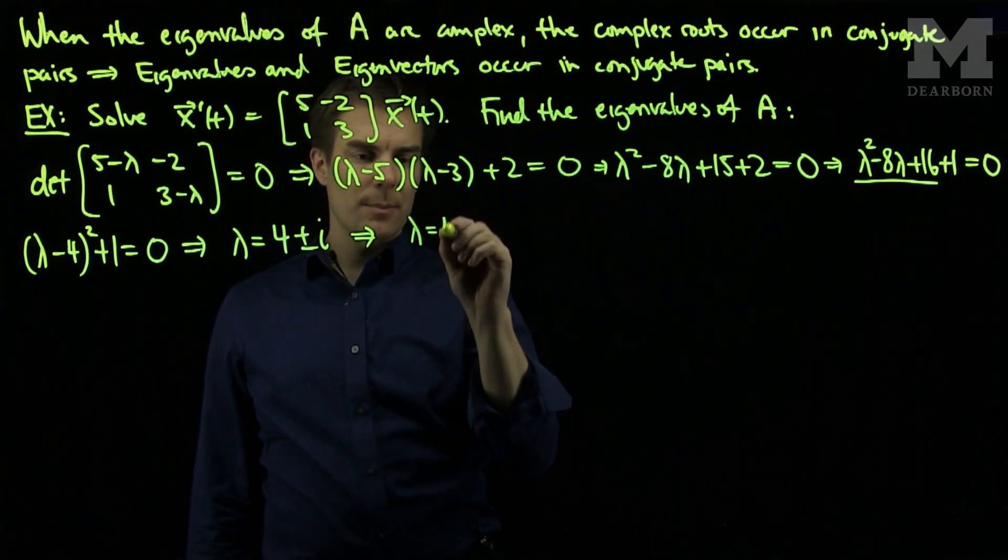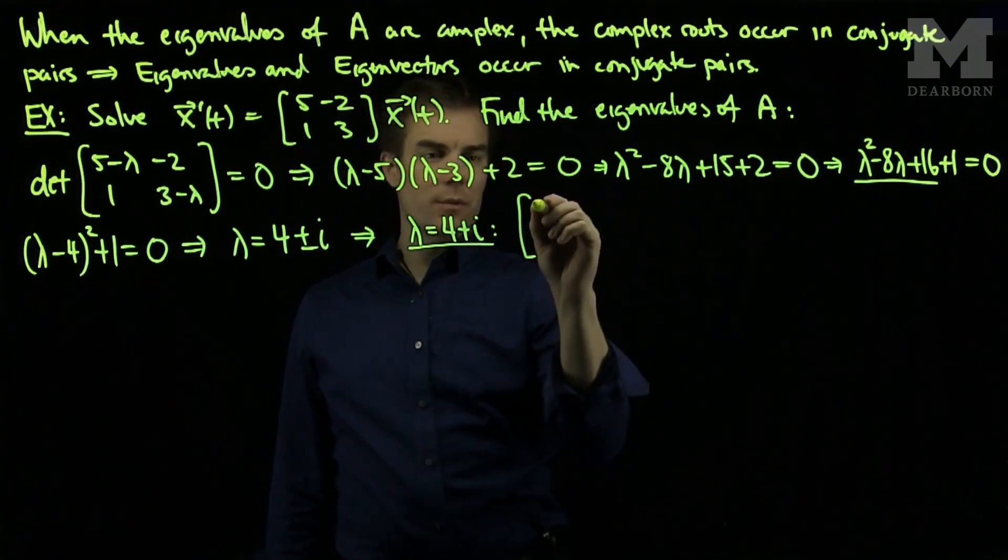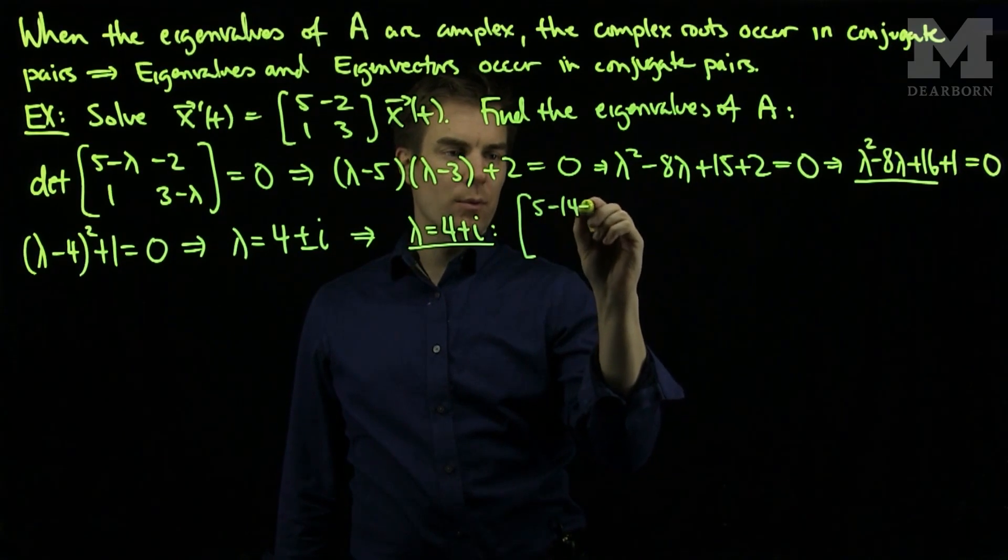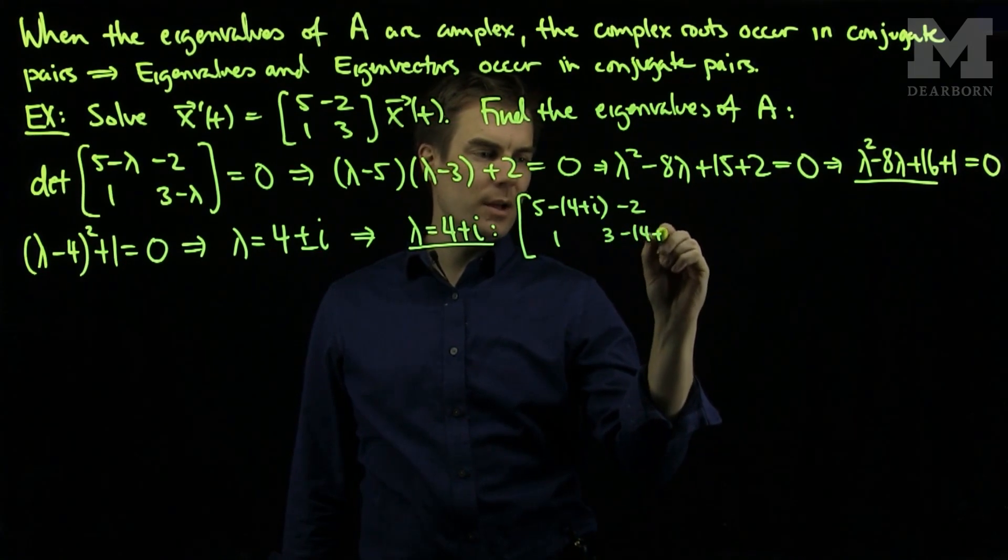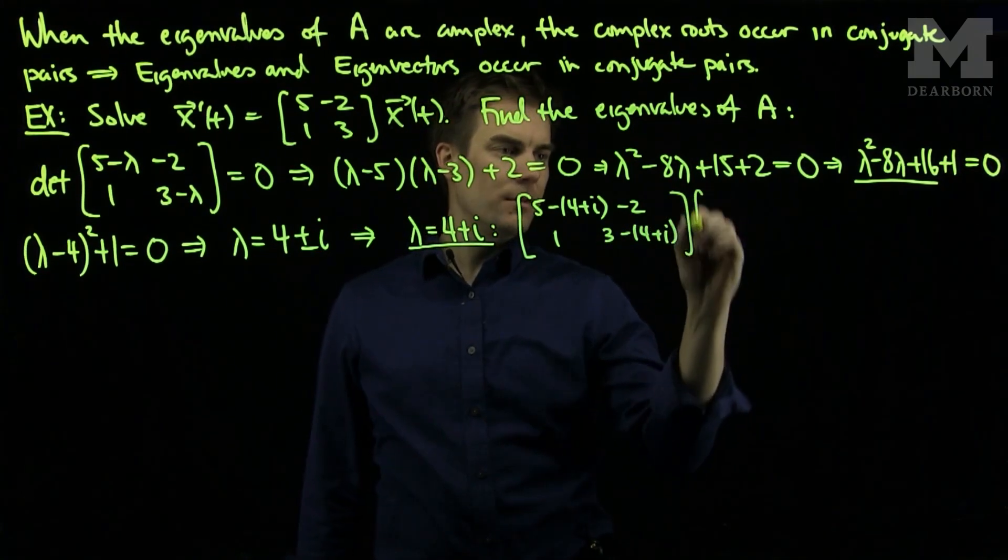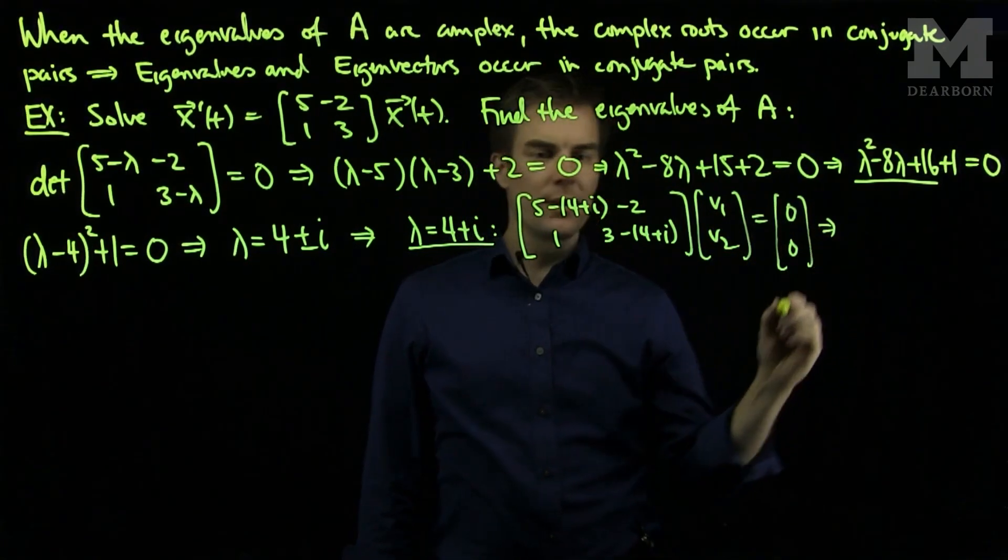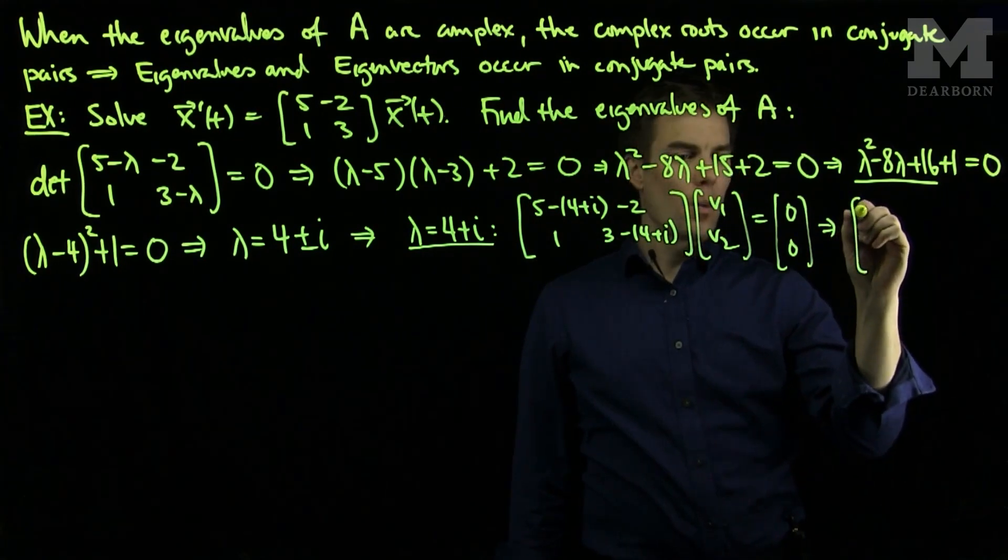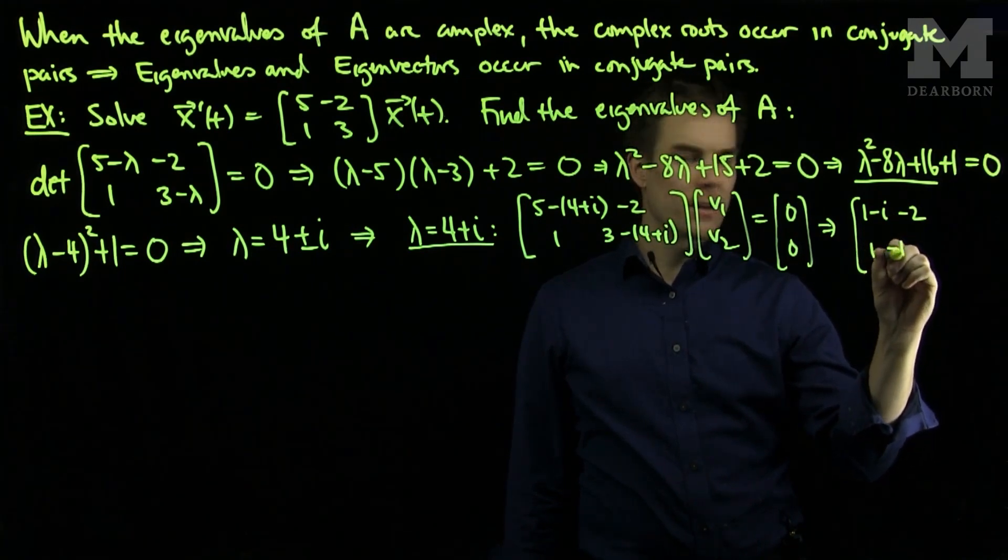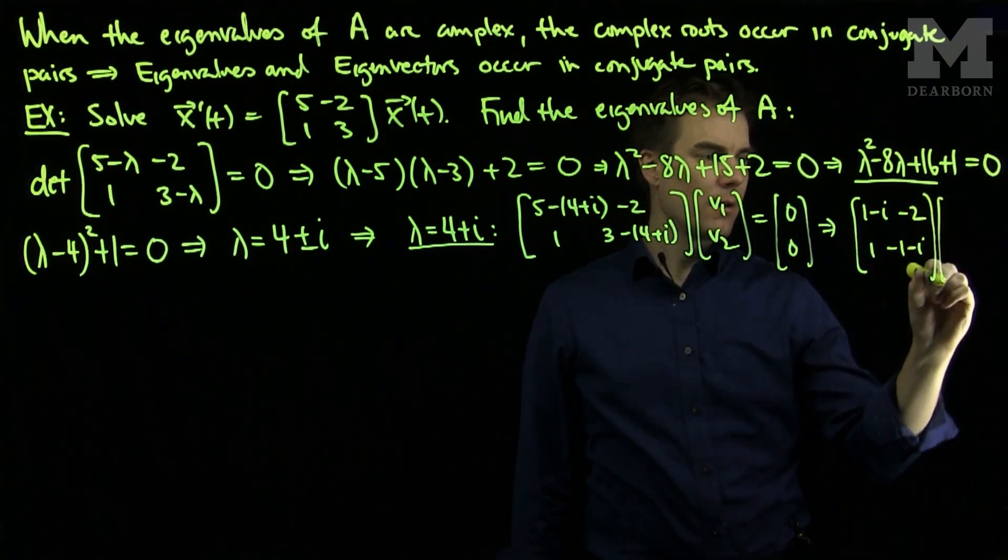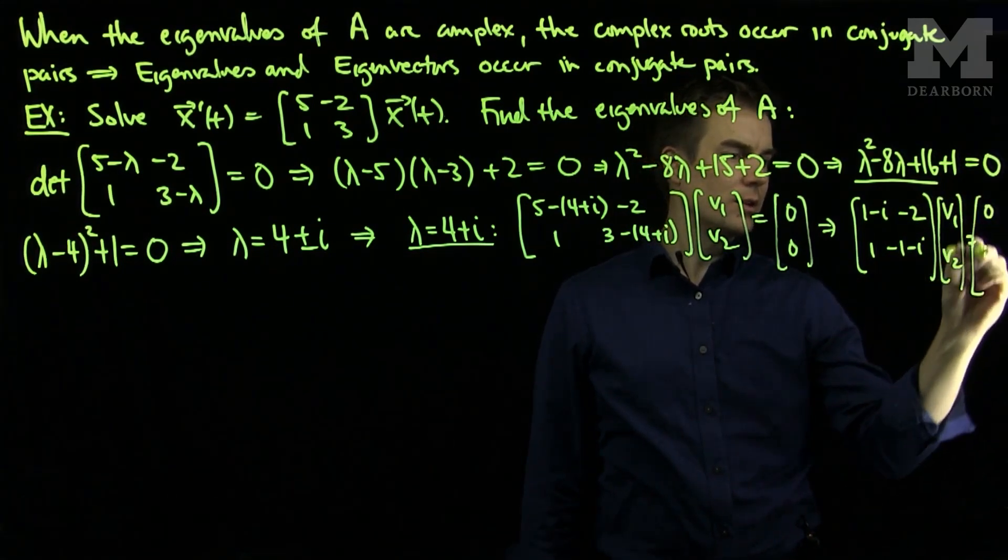Let's look at the case when λ = 4+i and find the eigenvector. To do this, I need to solve [5-(4+i), -2; 1, 3-(4+i)] times [v₁; v₂] = [0; 0]. This simplifies to [1-i, -2; 1, -1-i] times [v₁; v₂] = [0; 0].